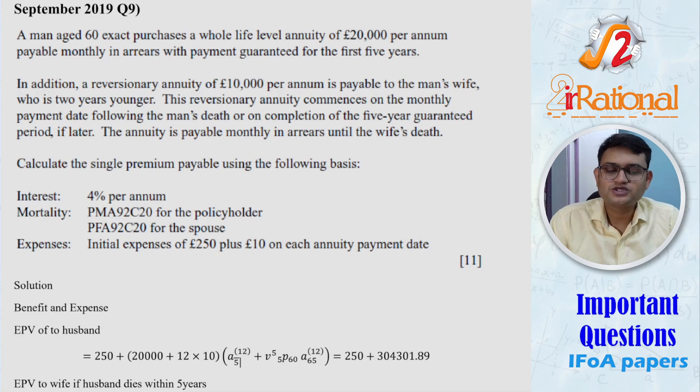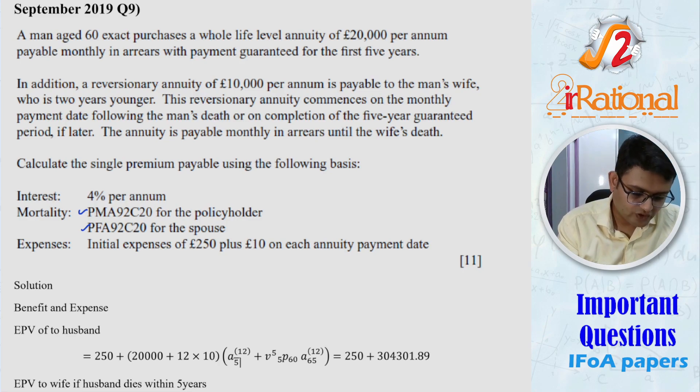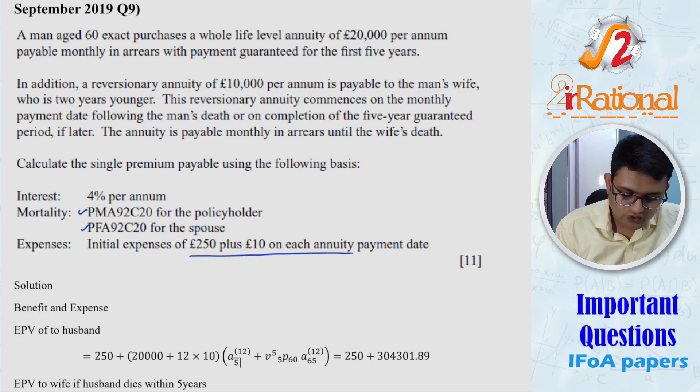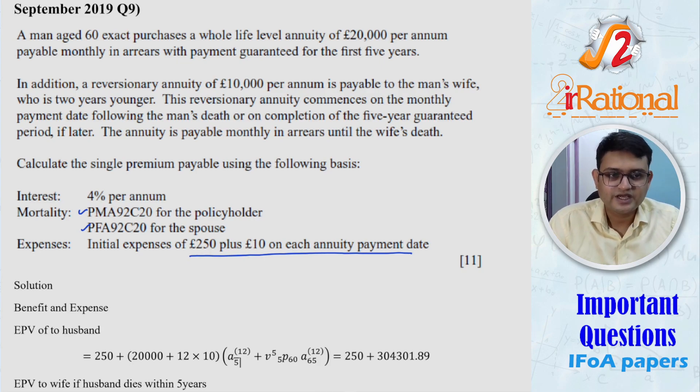Let's move to the next question. September 2019, I have chosen question number 9. So this is a joint life question. You can see that here. Now we are talking about a man age 60 purchases a whole life annuity of 20,000 per annum payable monthly in arrears with the payment guaranteed for the first five years. In addition, a reversionary annuity of 10,000 per annum is payable to the man's wife who is two years younger. This reversionary annuity commences on monthly payment date following the man's death or on completion of five years guaranteed period, if later. The annuity is payable monthly in arrears until the wife's death. This is more or less very straightforward.